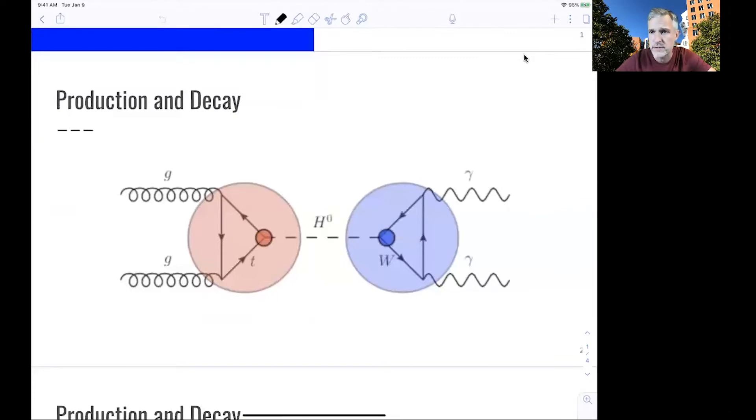But protons themselves are, as we have seen, objects which consist of quarks and gluons. So how do gluons produce Higgs bosons? This is shown in this Feynman diagram, where you have two gluons from two colliding protons. They are able, via this loop diagram, this triangle diagram,